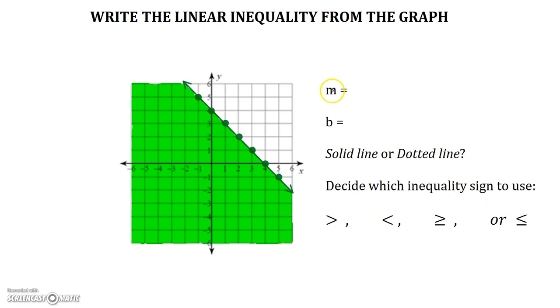We're looking at the slope, y-intercept, type of line, and inequality sign. Our slope, let's take a look, going down 1 over 1, down 1 over 1, down 1 over 1. Our slope is negative 1, and this graph intersects the y-axis at 4, so our y-intercept is 4.